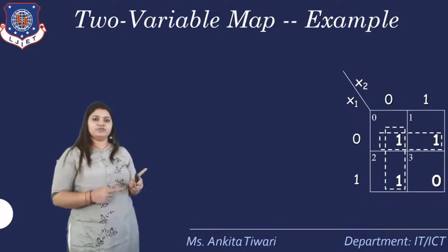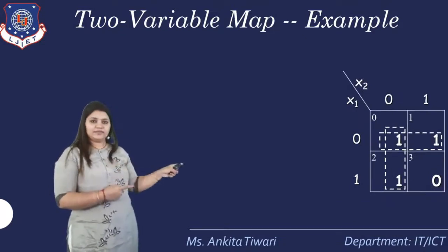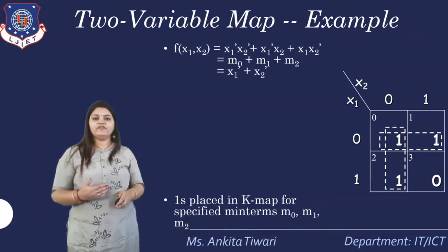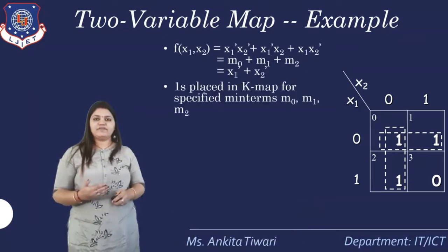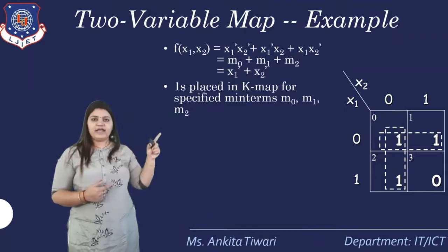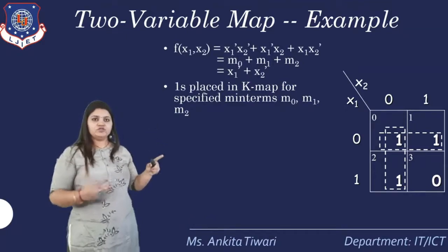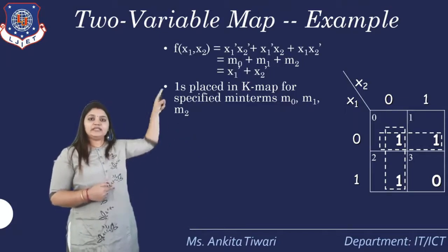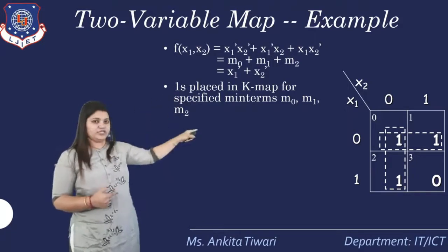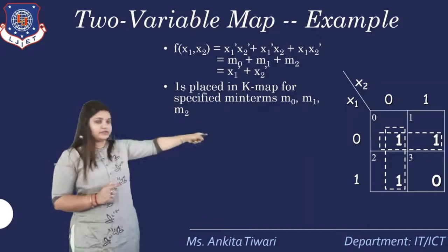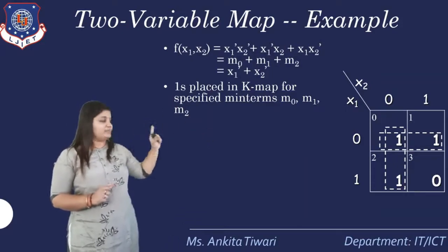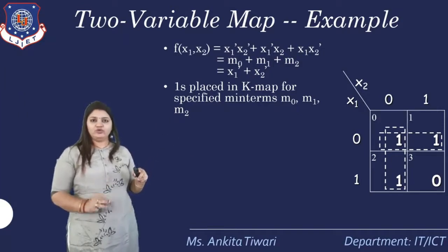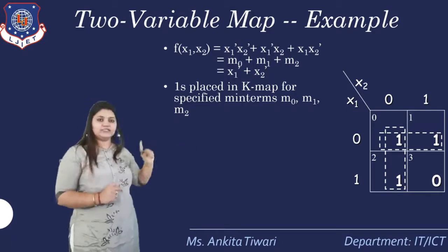Suppose we have the values 1, 1, 1 — three values given as part of the question. Suppose the function is f(X1, X2). Three terms are active: X1 bar X2 bar, so the 0th term is active; X1 bar X2, so the 1st term is active; and X1, X2 bar, so the 2nd term is active. That is terms 0, 1, and 2. The 3rd term is absent, so we put a 0 there. Now we will reduce it by making pairs.